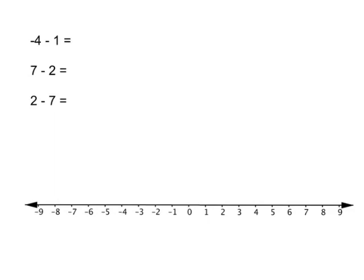Let's see how we did. The first one, we start at negative 4, and we have to take one step backwards, because we are subtracting one, so we'll end up at negative 5.